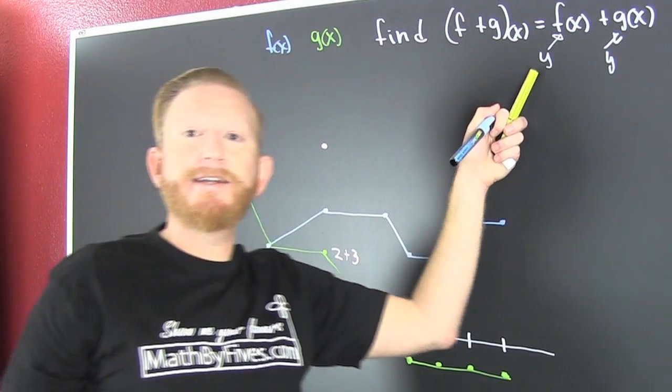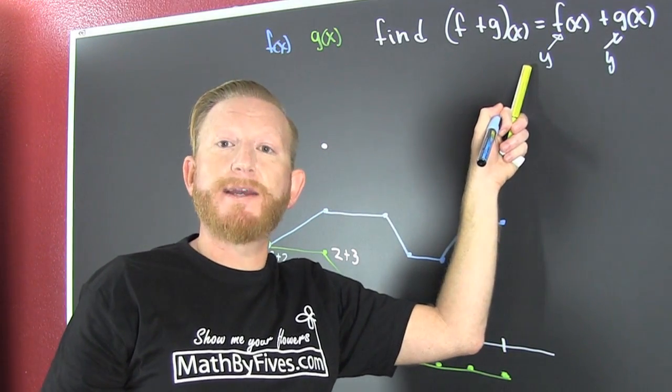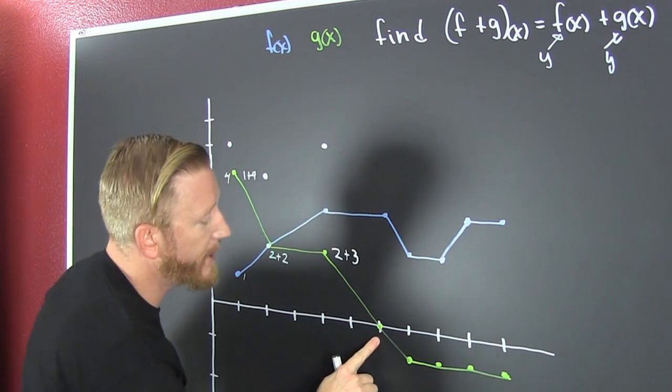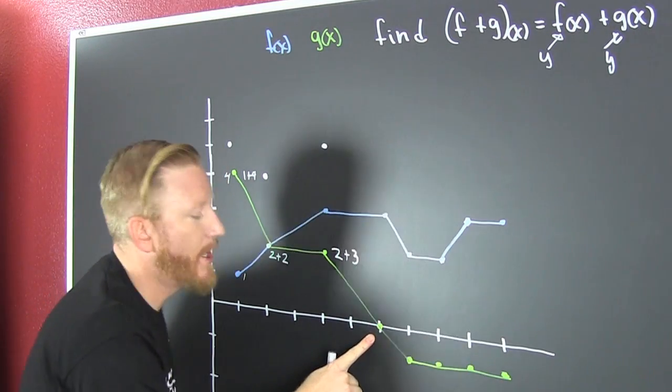Why? Because I'm adding their Y values. Because F of X is the function formally known as Y. Kind of like Prince. And G of X is the function formally known as Y. Kind of like Prince. Not that Prince. Okay.